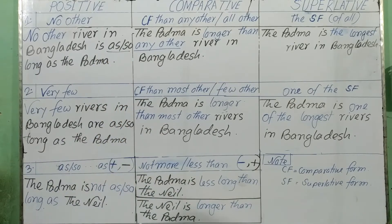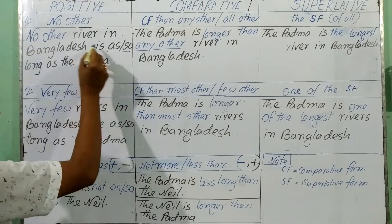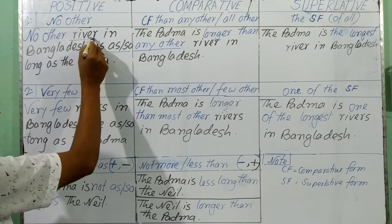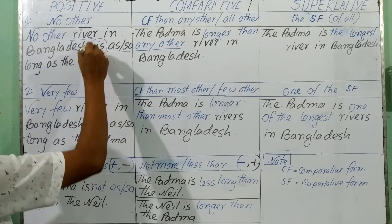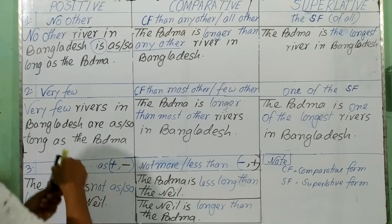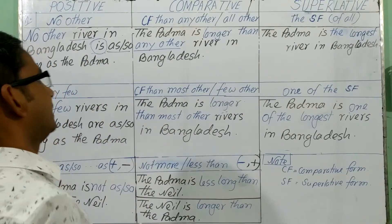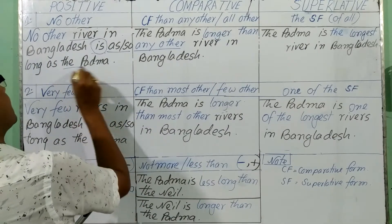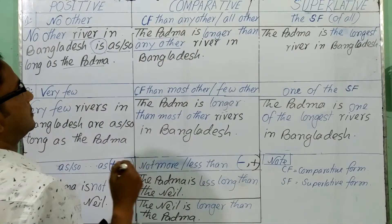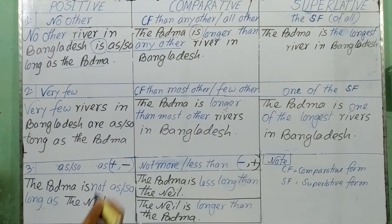So 'no other' — you can have 'no other river in Bangladesh' — 'no other river,' as there is a singular noun, so you will have to use 'is.' Always after 'no other' you will have to use a singular noun, then the singular form of the verb as well. Then let's go to the rules.